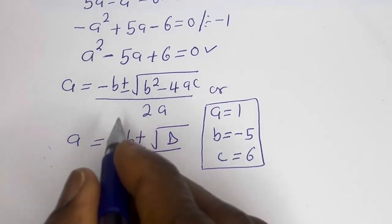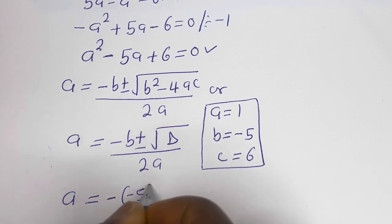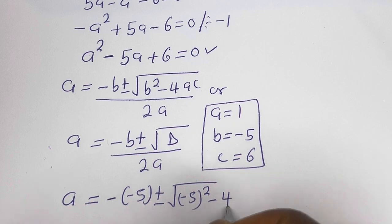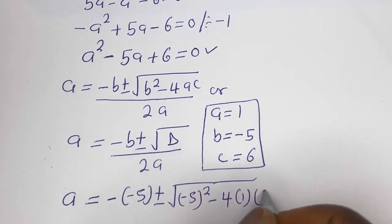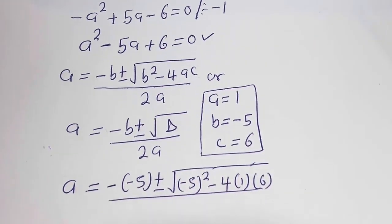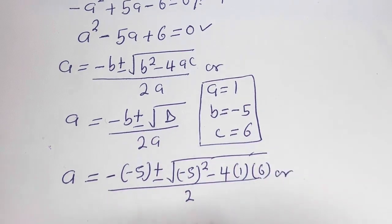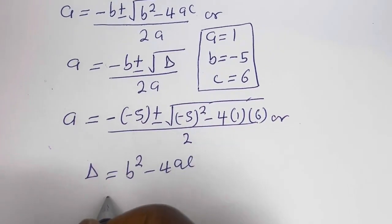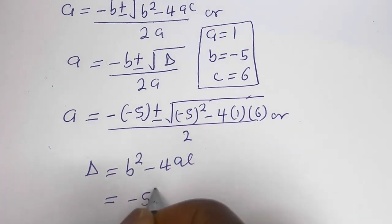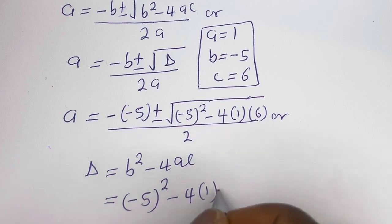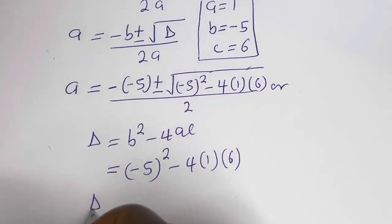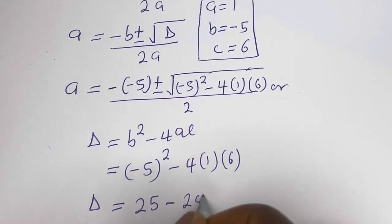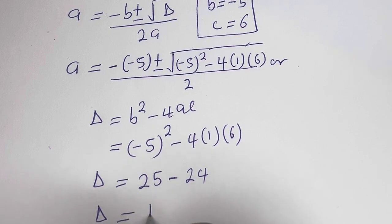Substituting: a equals negative (negative 5) plus or minus square root of (negative 5) squared minus 4 times 1 times 6, all over 2 times 1. The discriminant d equals 25 minus 4 times 1 times 6, which is 25 minus 24, so d equals 1.